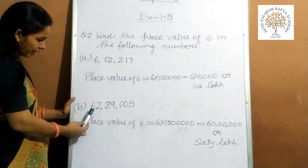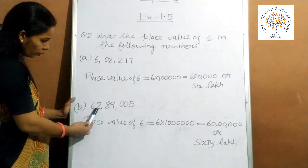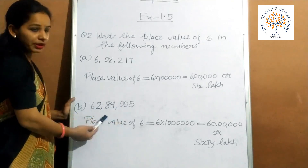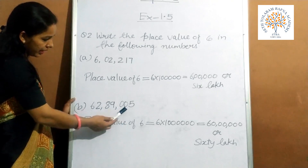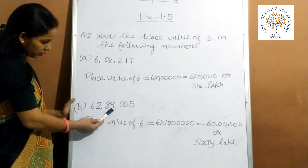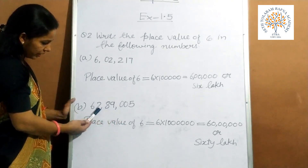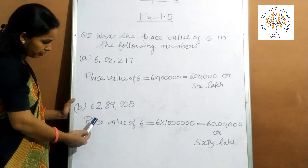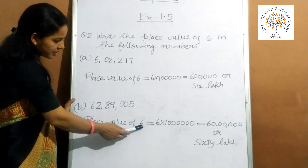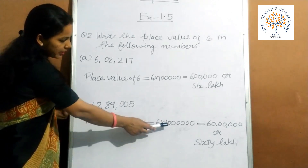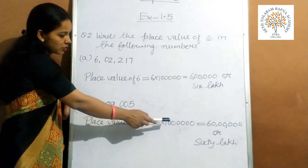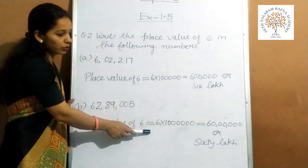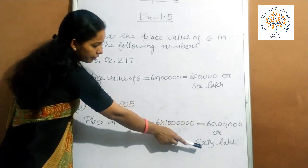Now the second part: the number is 62,89,005. According to the place value chart — 1s, 10s, 100, 1000, 10,000, lakh and 10 lakh. So 6 is in the 10 lakh place. So the place value of this 6 is equal to 6 multiplied by 10 lakh, which equals 60 lakh. We can write this place value in numerals or in words also.